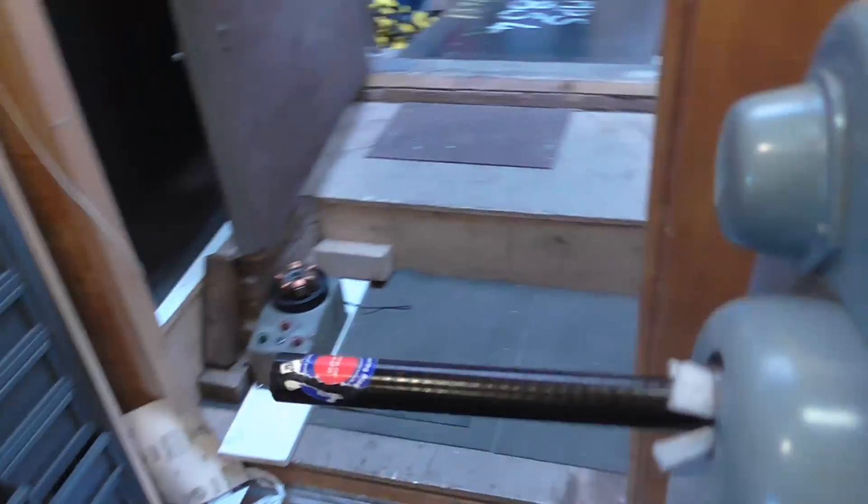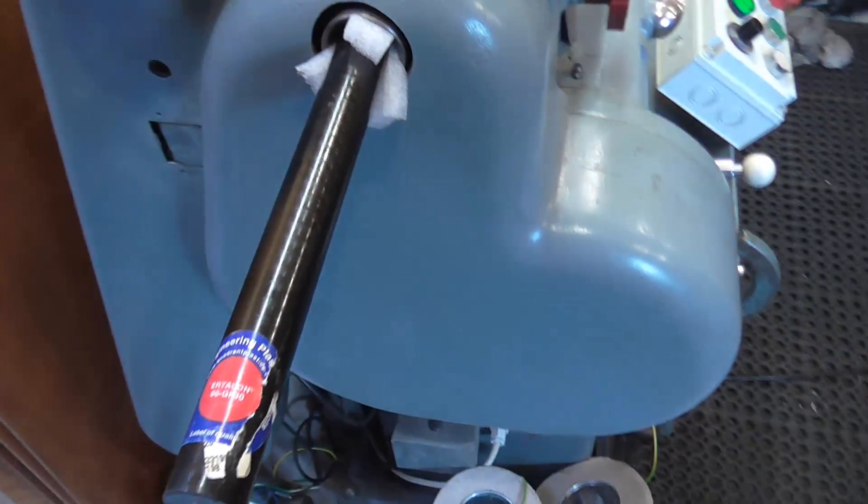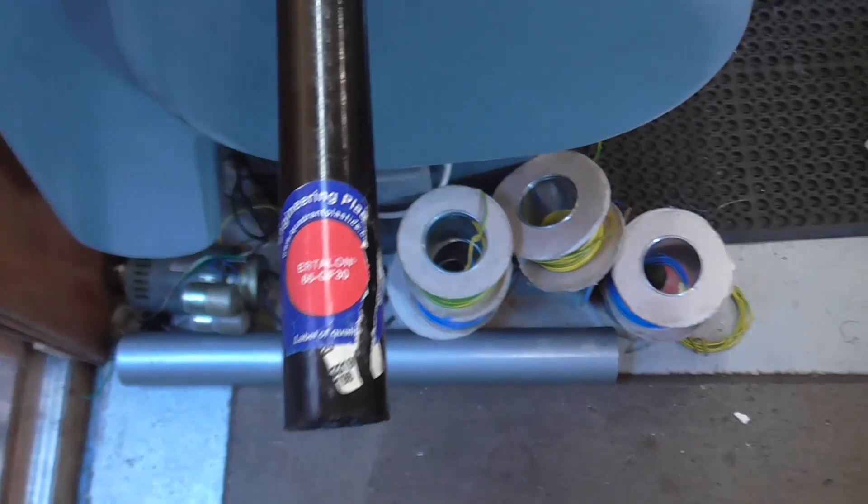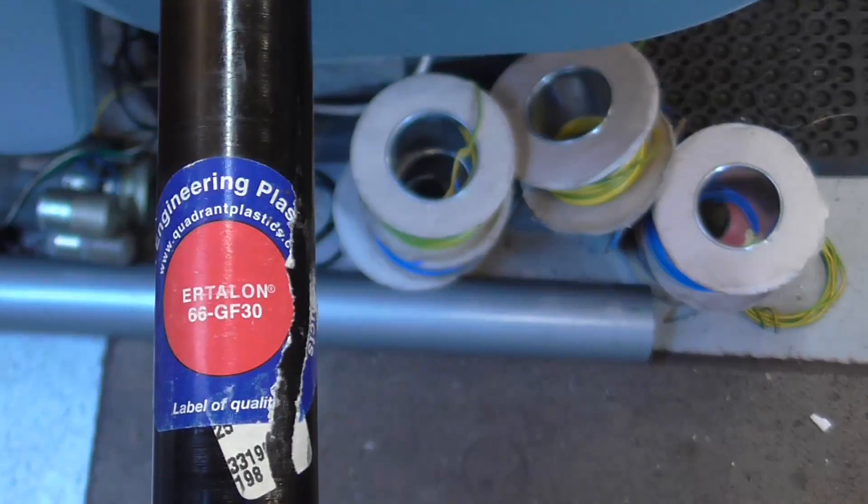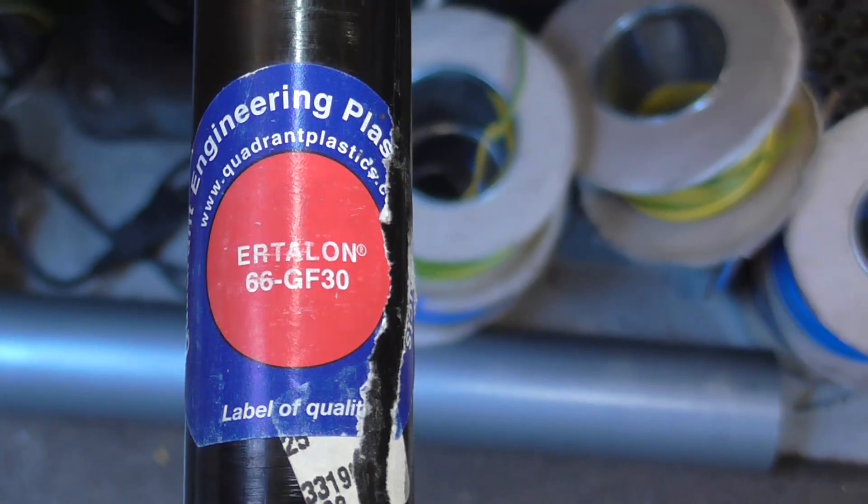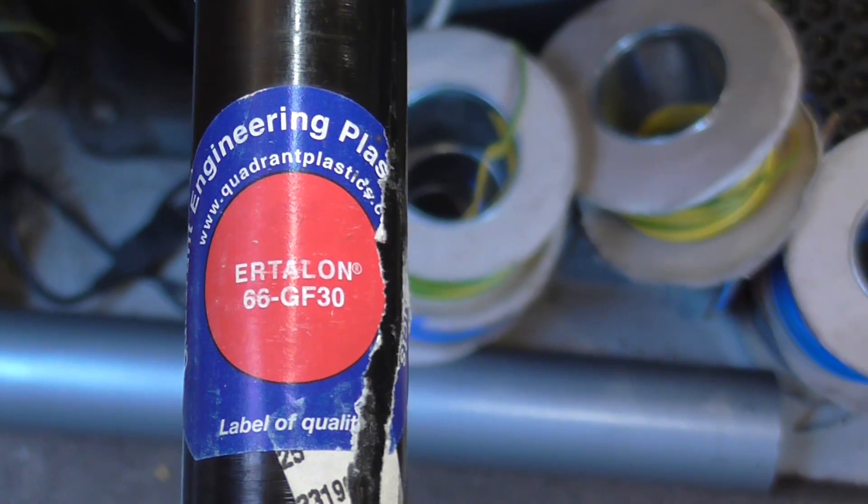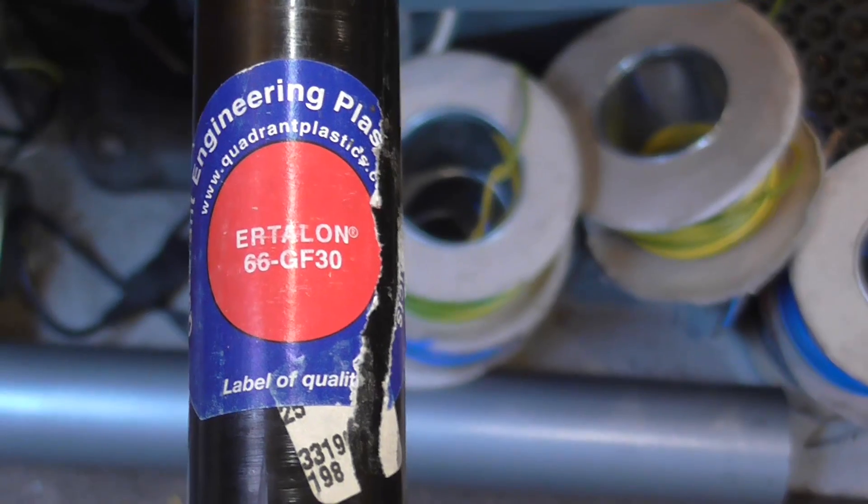In the lathe is a length of glass reinforced nylon, the specific material - I might even be able to zoom in - is Ertalon 66 GF30, that's 30% glass.